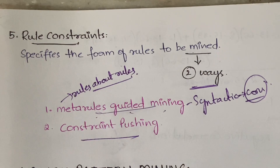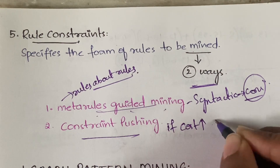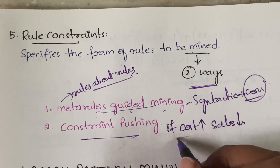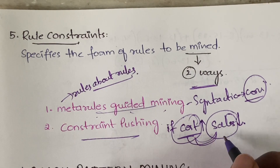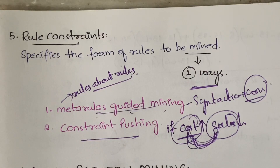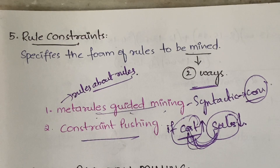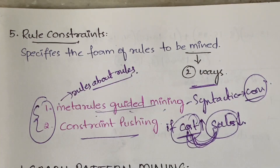Next is constraint pushing. In constraint pushing, you use rule constraints to specify the relationships of the variables which are in the rules. For example, if you generate a rule like 'if cost increases, sales decreases' — here cost is one variable and sales is another variable. The relationship between these two variables can be defined using constraint pushing. It specifies what kind of variables can be used together and what kind should not be used together.